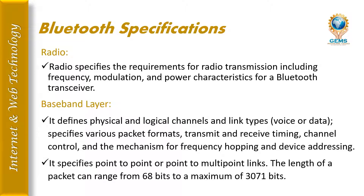The baseband layer defines physical and logical channels, link types such as voice or data, packet formats, transmit and receive timings, channel control, and mechanisms for frequency hopping and device addressing. The baseband layer specifies point-to-point or point-to-multipoint links. The length of a packet can range from 68 bits to a maximum of 3071 bits.